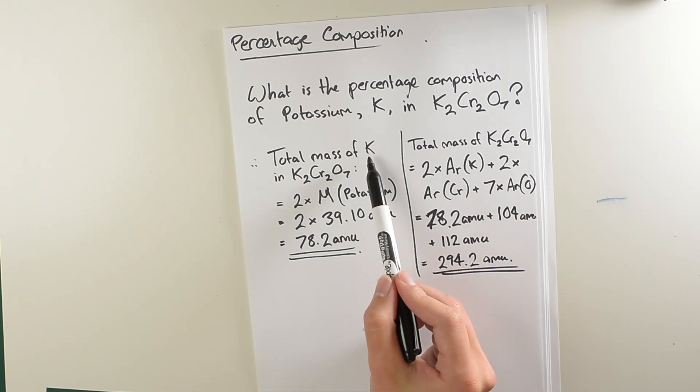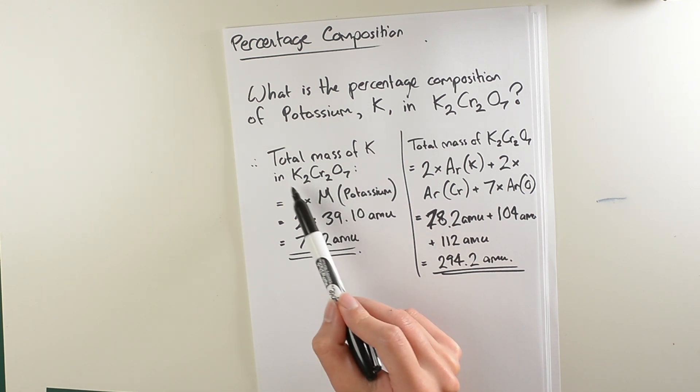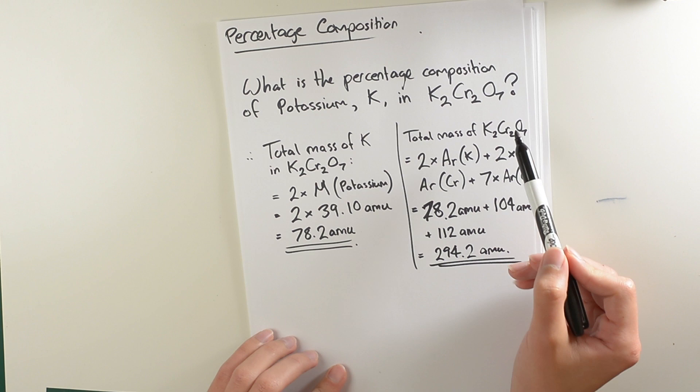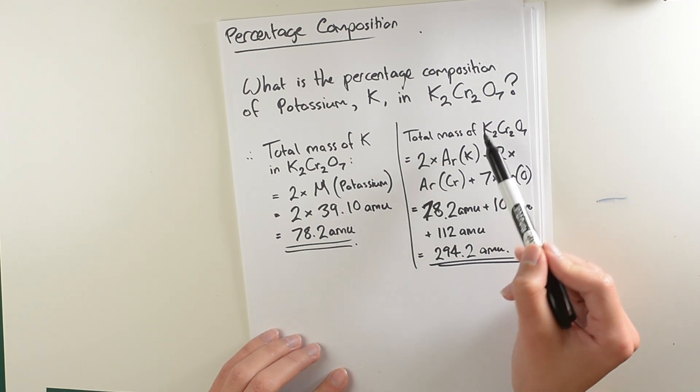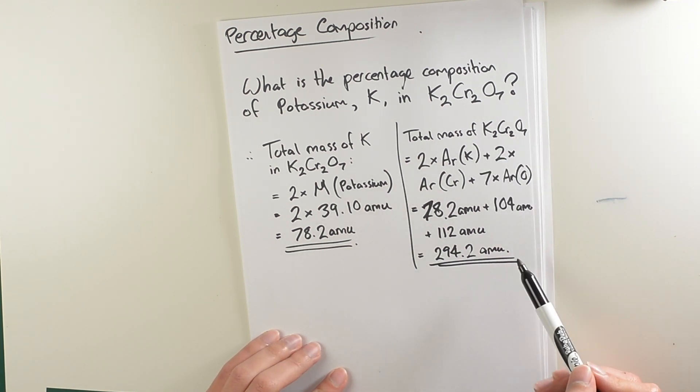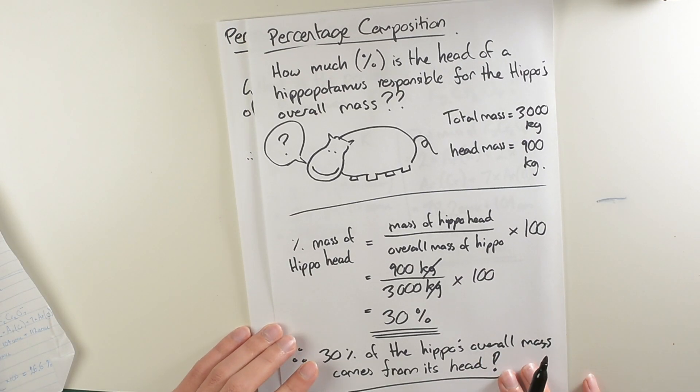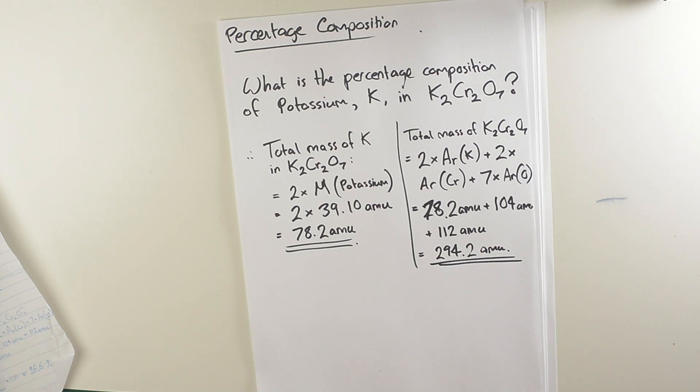Notice here that I've calculated the total mass of potassium here in atomic mass units, and similarly I've also calculated the molar mass of potassium dichromate in atomic mass units as well. This is alright, because when we do our final calculation the units will just cancel out, so it won't make a difference.